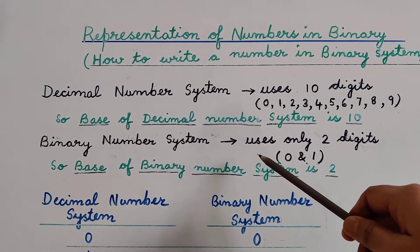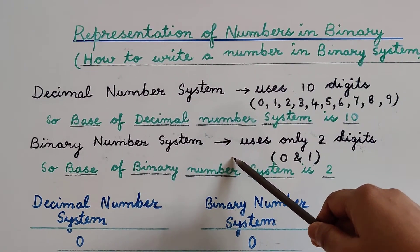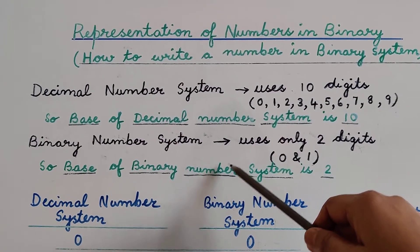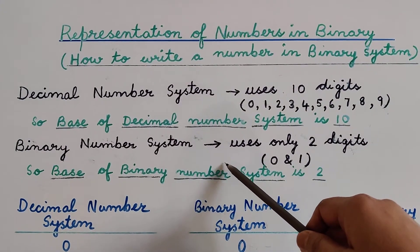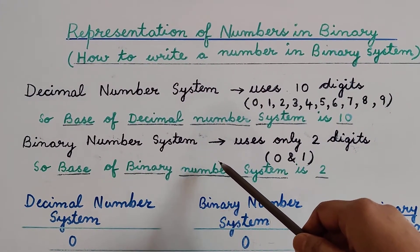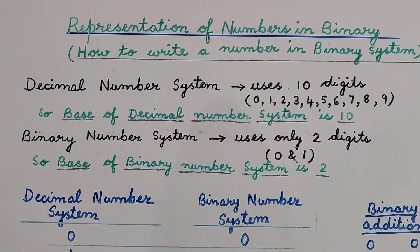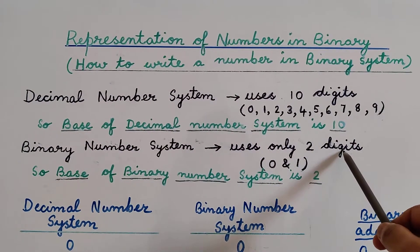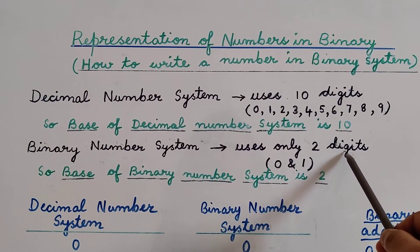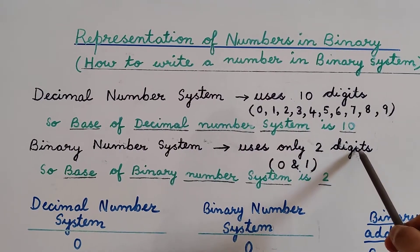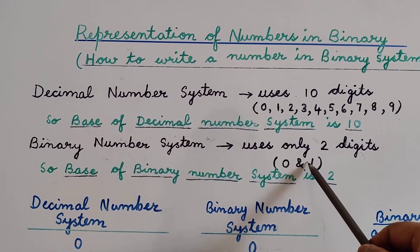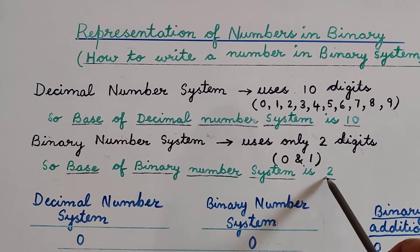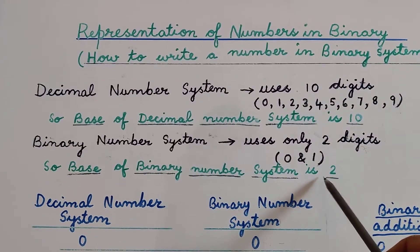The next type of number system is the binary number system, which is used in digital electronics, and computers also work on the binary number system. The word binary means two, so the binary number system is a number system which uses only two digits for representation — 0 and 1. So the base of the binary number system is 2.